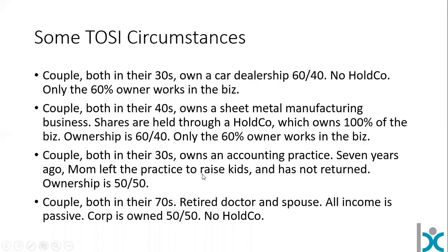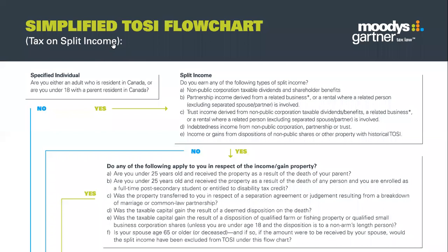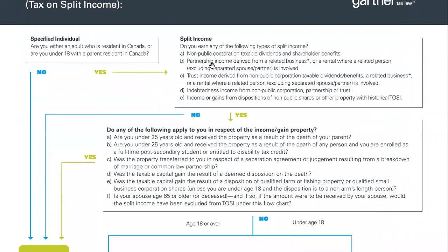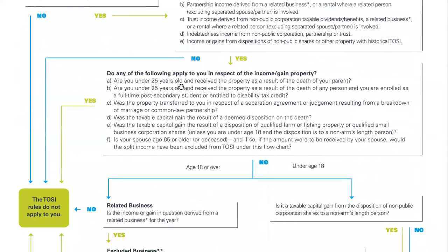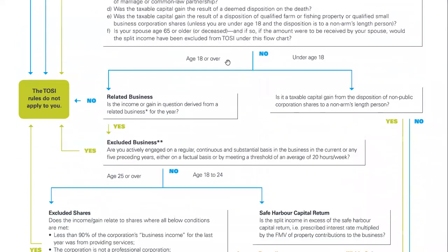Let's go to our next scenario. We have an accounting practice. In this instance both accountants — mom and dad or whatever the combination is here — they both worked in the business for a while, but seven years ago mom left to raise the kids and has not come back. Ownership here is 50-50. We already know we're looking at a specified individual, non-public corporation, taxable dividends. We don't have any exemption for separation or death here, it's not a capital gain and nobody's over the age of 65. We can keep working our way down the chart.